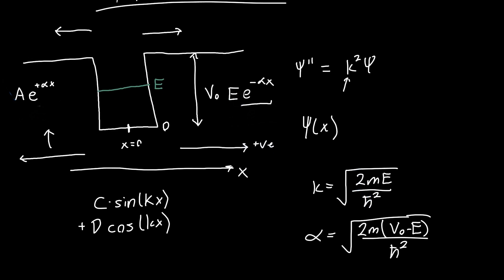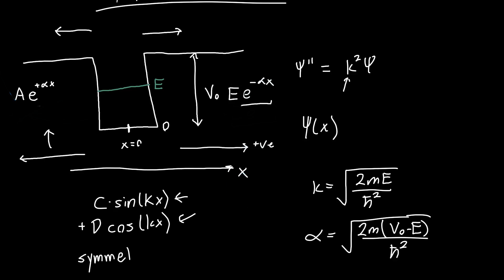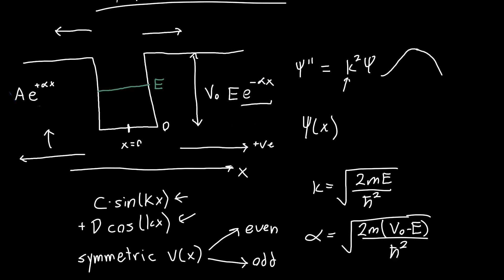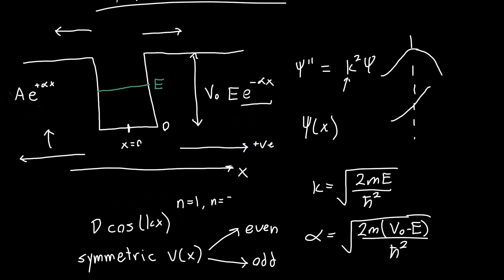We can simplify these solutions further using a symmetry theorem in quantum mechanics, which says if you have a symmetric potential V(x), then your solutions are either even or odd. An even solution is symmetric about x equals zero, and an odd solution is anti-symmetric — positive in one direction, negative in the other. So our solutions are either a sine or a cosine, but not a combination of both. First, we'll deal with the cosine, which applies to the ground state n=1, n=3, and so on.